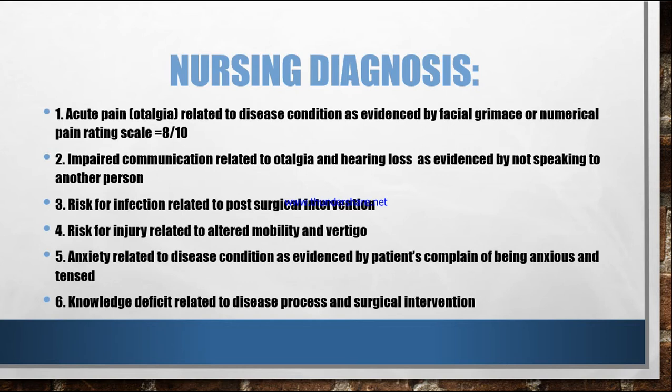Next is impaired communication related to otalgia and hearing loss, as evidenced by not speaking to another person or lack of interpersonal relationships. By not being able to hear or having pain in the ear, patients are not able to hear properly and their communication is decreased. This is the second diagnosis.